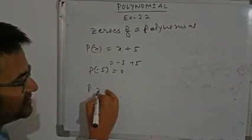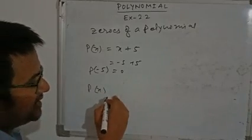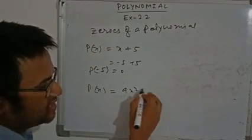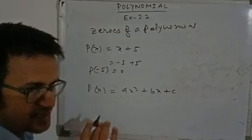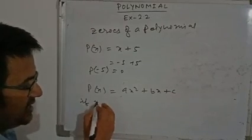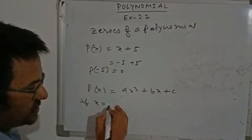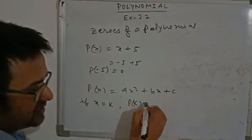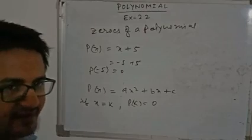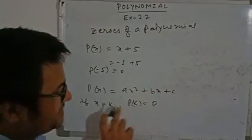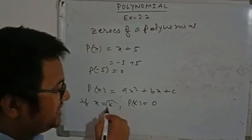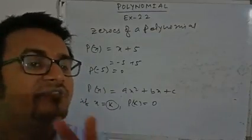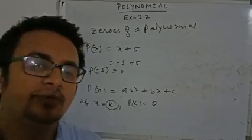Suppose P(X) is a polynomial in variable X, say AX squared plus BX plus C. If a value X equals K gives P(K) equals zero, then K is called the zero of the polynomial. Zeros are the values of the variable at which the value of the polynomial is zero.